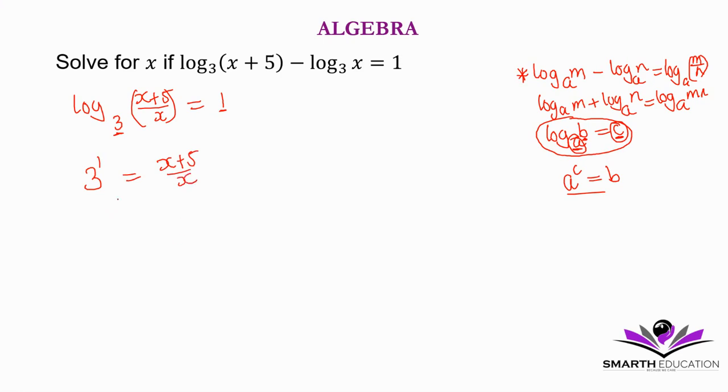Alright. So 3 to the power 1 is 3. Then we multiply both sides by x. So 3 times x equals (x+5)/x times x. You can also cross multiply.